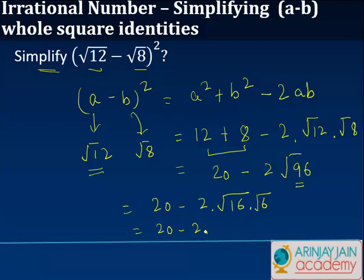This gives us 20 - 2 times √16, which is 4, times √6. In other words, the solution is 20 - 8√6.